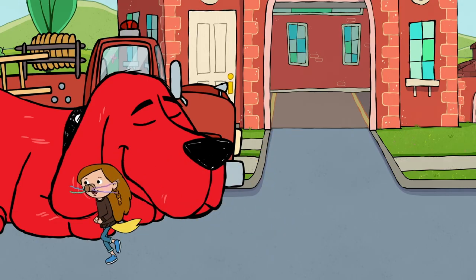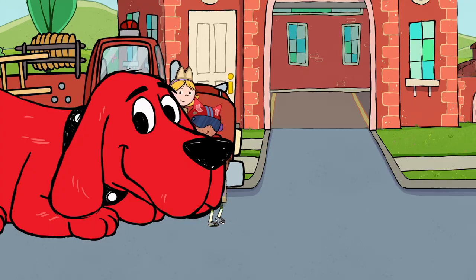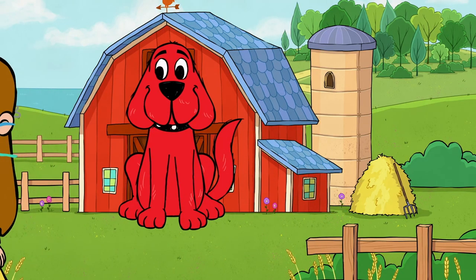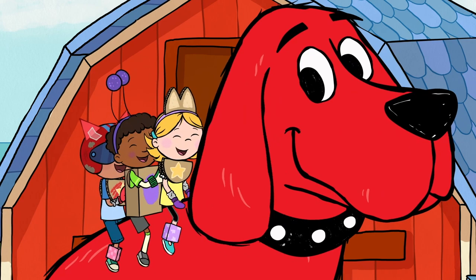If you want to make the hunt a bit trickier, remember to camouflage Clifford by hiding your clothespin in and around things in your home that are red. This will make our big red friend harder to spot.